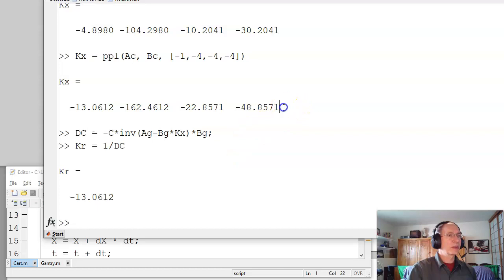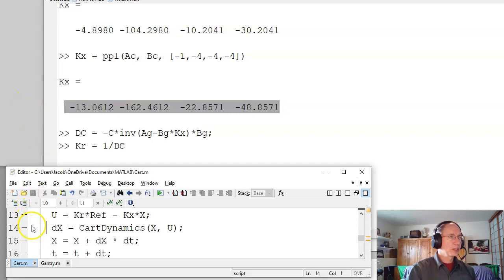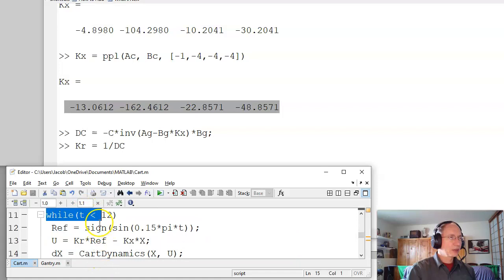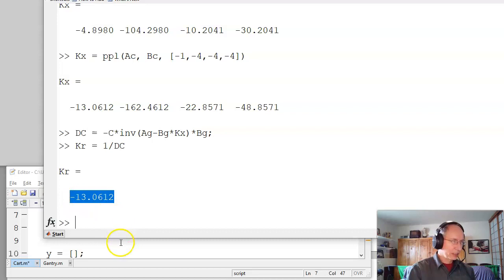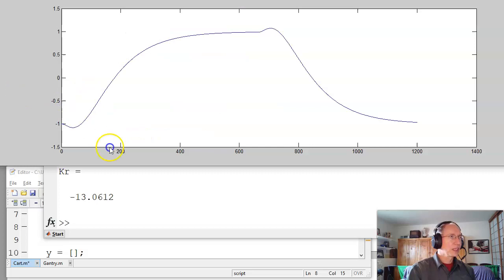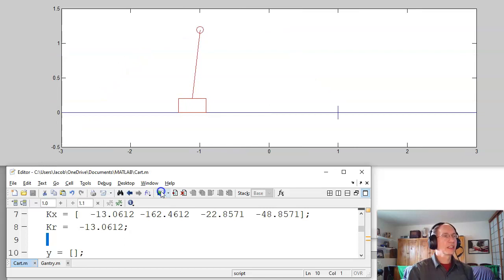The kr to make the DC gain 1 should be minus 13.06. If I try these feedback gains, that should also work. So if I copy those, go into my simulation, change kx. Oops. Come back, come back, come back. There you are. Here's kx. Here's kr. Copy, paste. Now if I run with these new improved feedback gains, it ought to look just about the same. The reason it looks the same is I've got the same dominant pole. It's at minus 1. The other three poles are somewhere. As long as they're fast, I really don't care where they are.